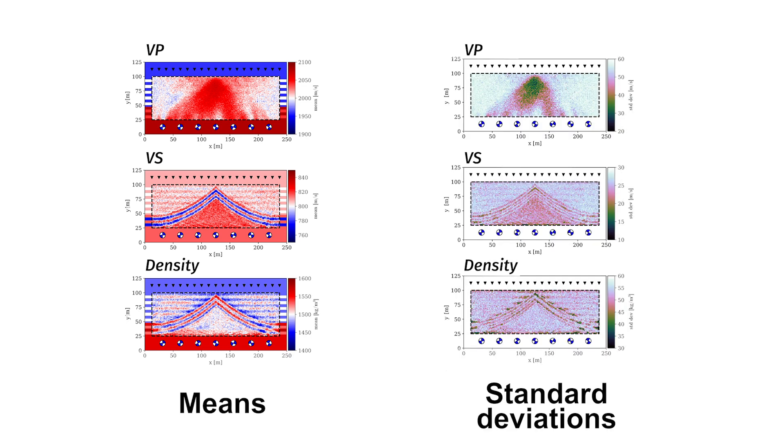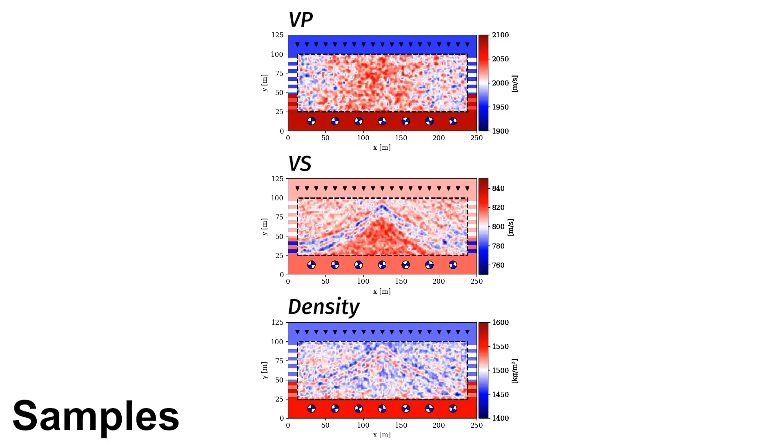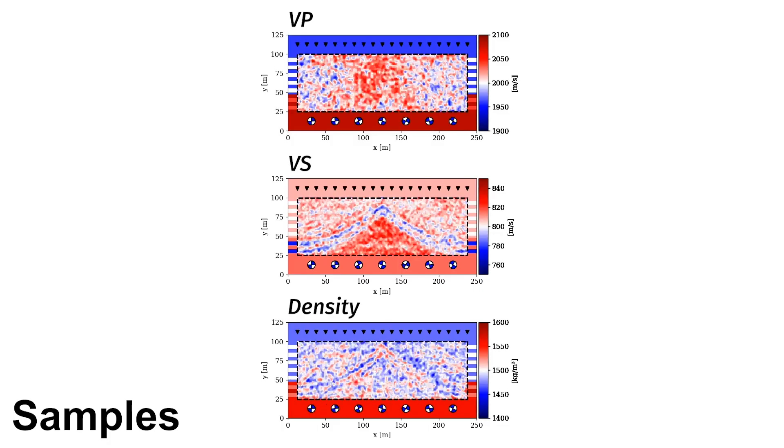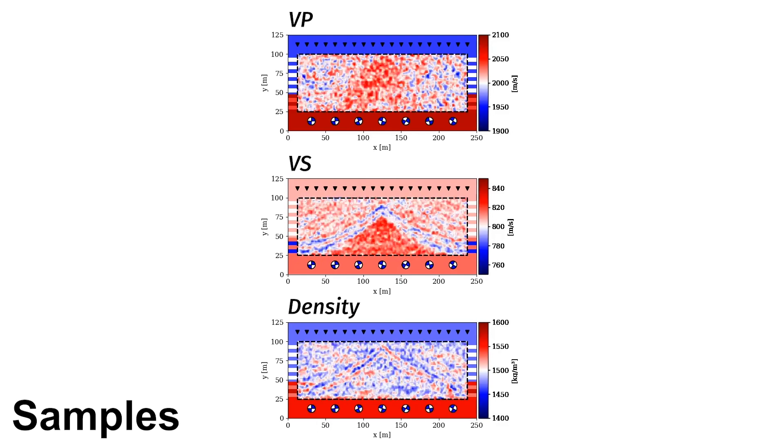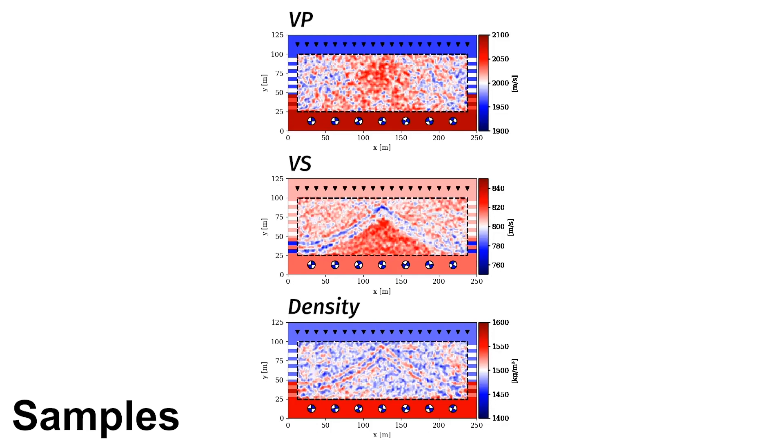That means we computed optimal models as well as uncertainty, correlation and other statistical parameters. In this animation you see a few of these realizations. This demonstrates that using gradients in Markov chains allows us to do Bayesian full waveform inversion.